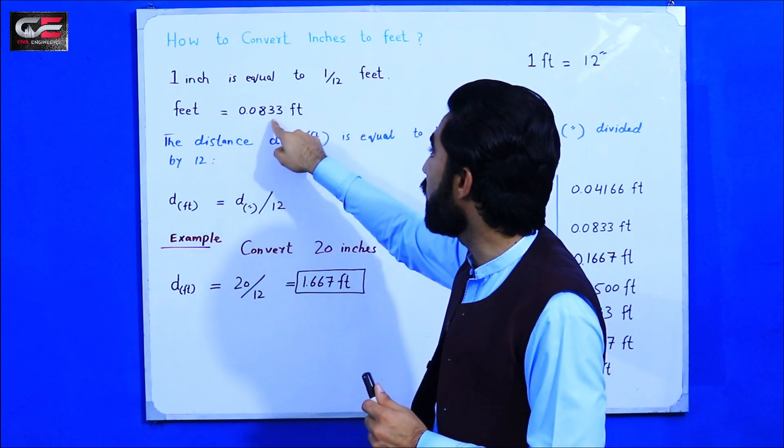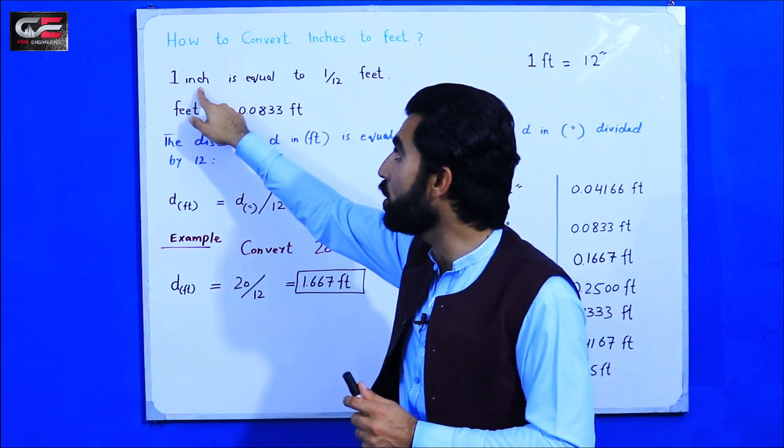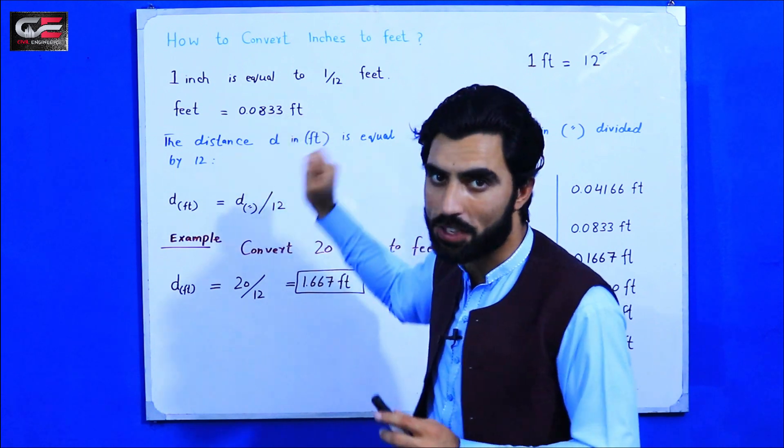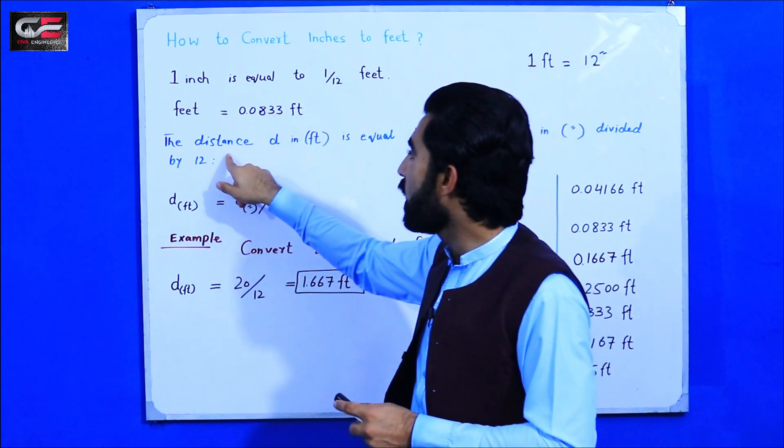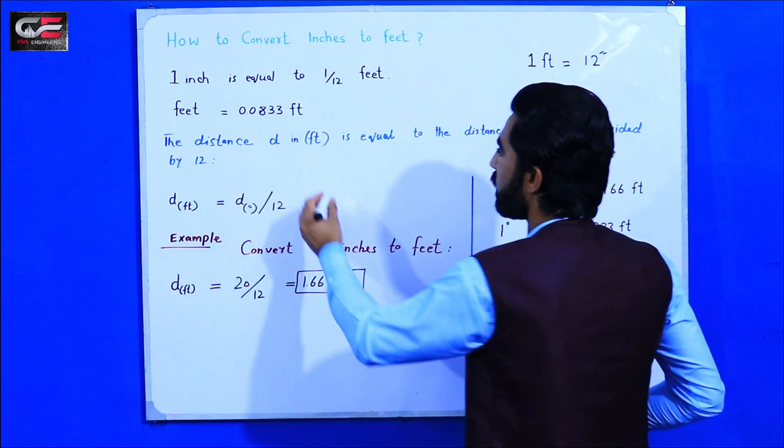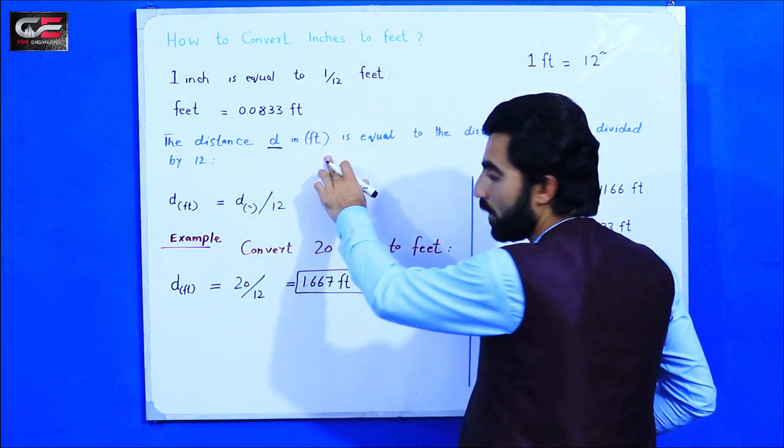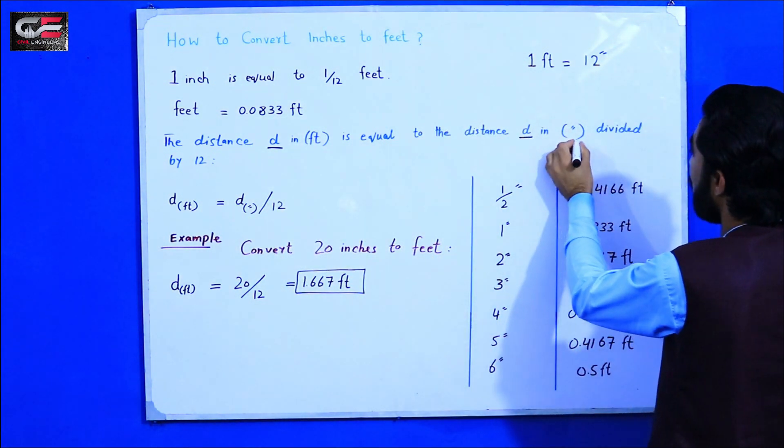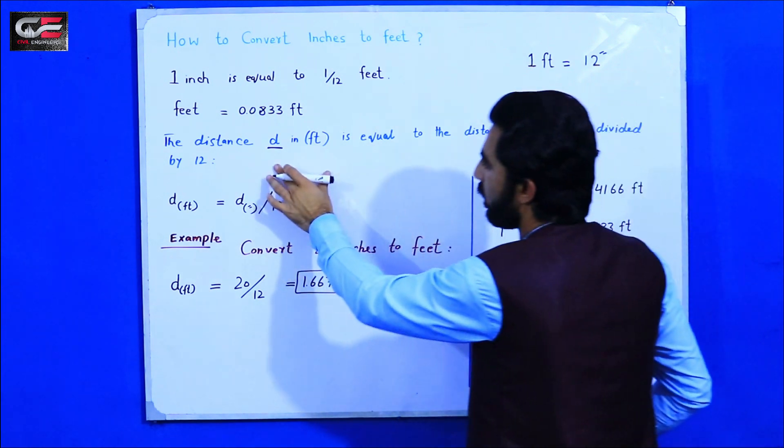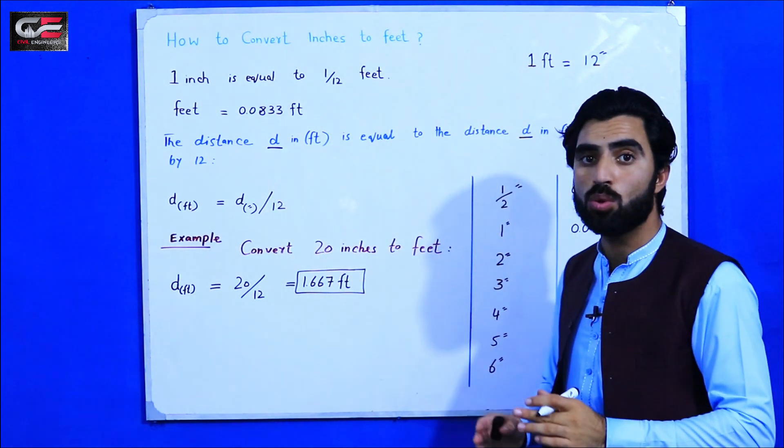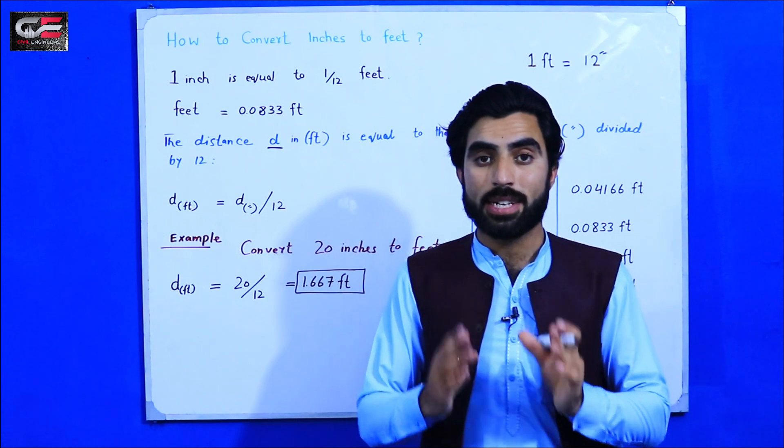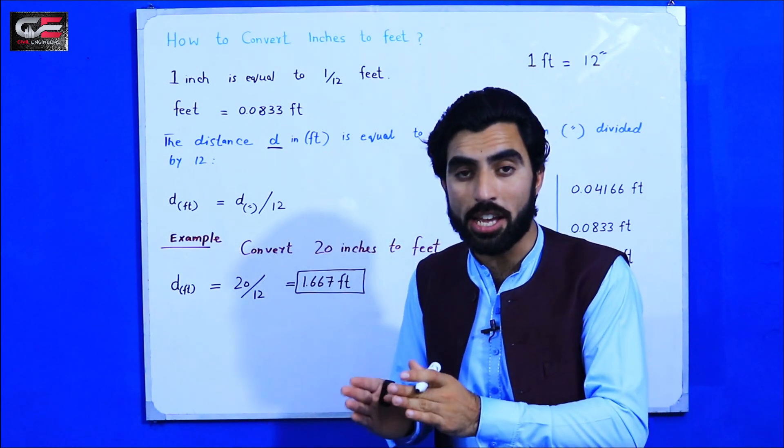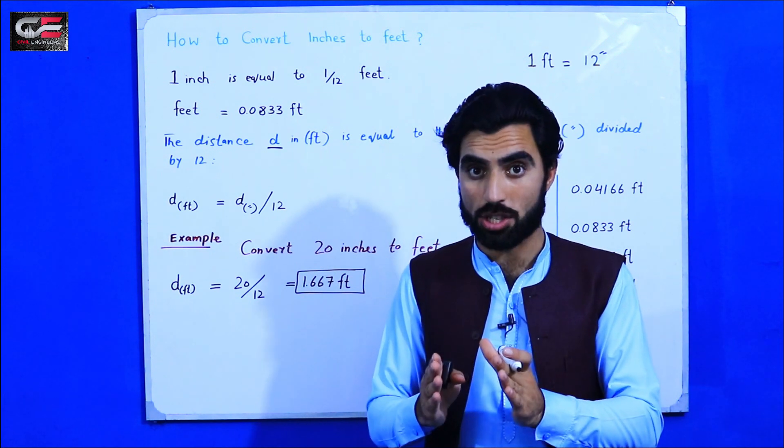Now guys, you can see the distance d in feet is equal to the distance d in inches divided by 12 to get distance d in feet.